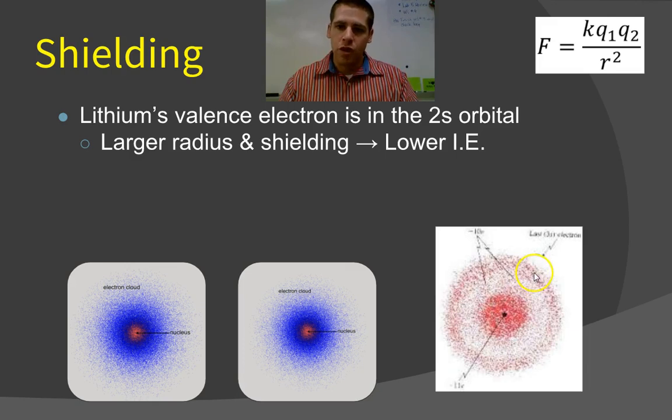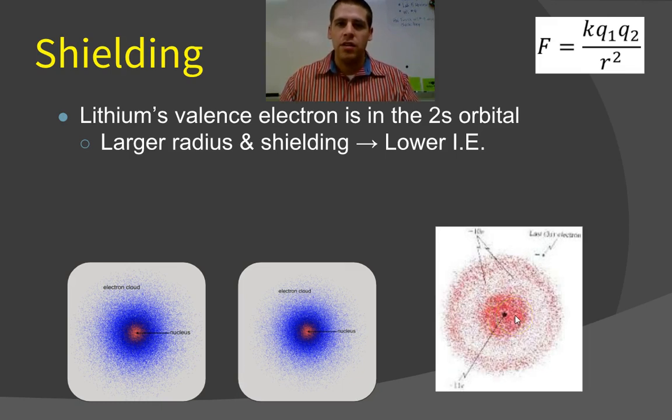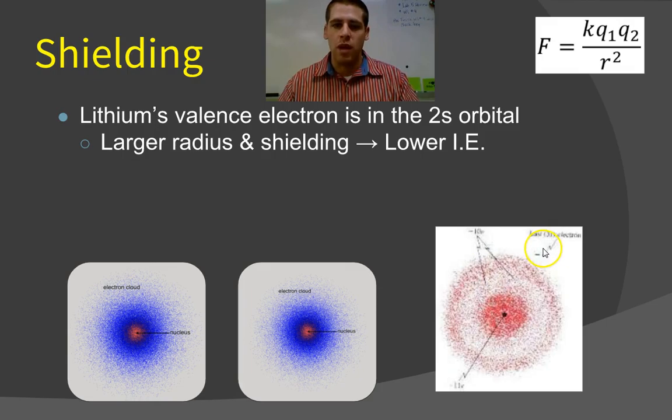And so the attraction force from the electron on the outside to the nucleus is going to be somewhat reduced, like we have a lower net force because we also have this repulsion force from the inner electrons pushing out on the outside electrons. And because we have a larger radius as well, because the 2s is larger than the 1s, we have a lower ionization energy, meaning it requires less energy to remove that one electron.